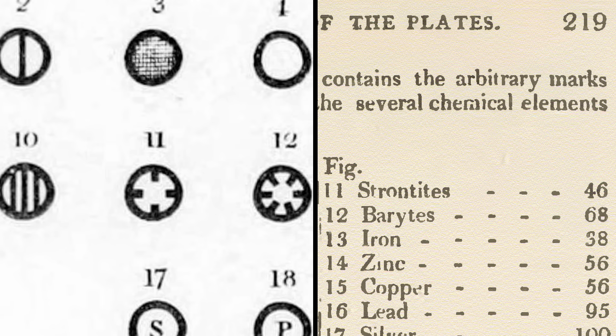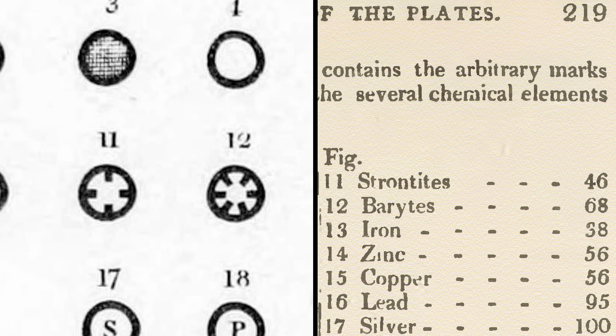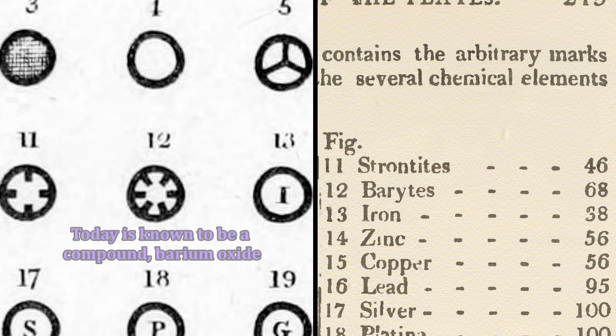Strontites most likely translates to strontium. Barites is a compound as well, barium oxide, but Dalton was most likely referring to barium.